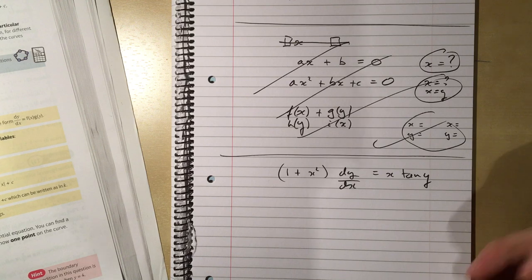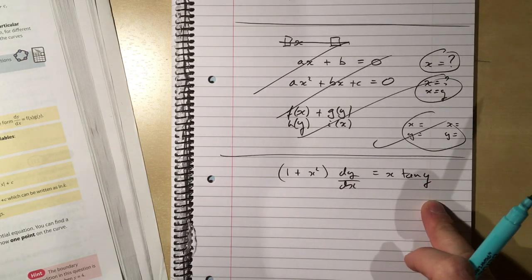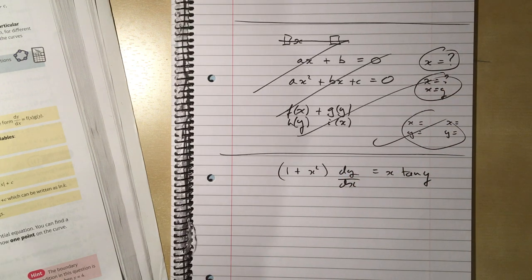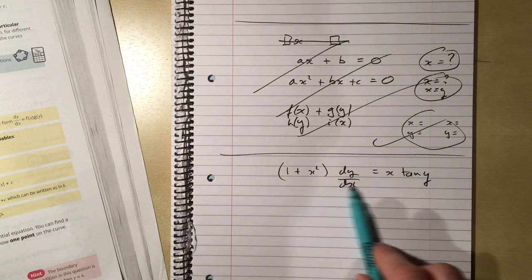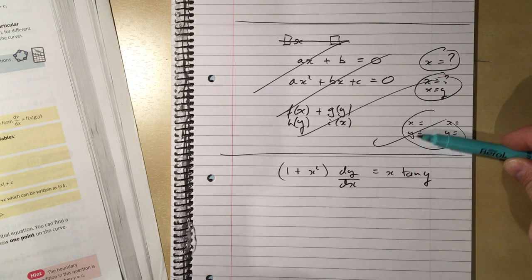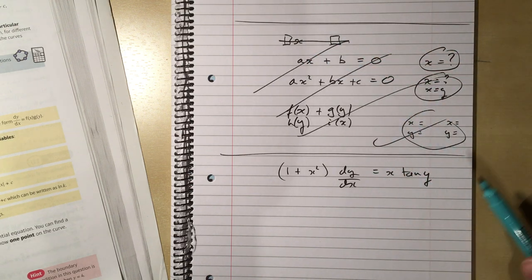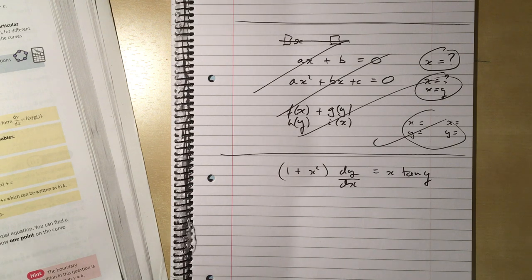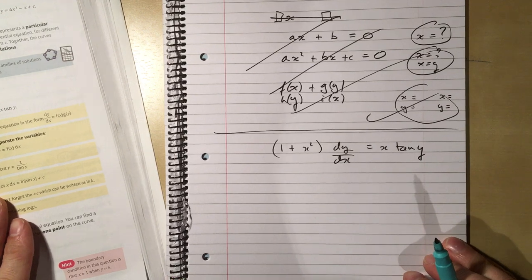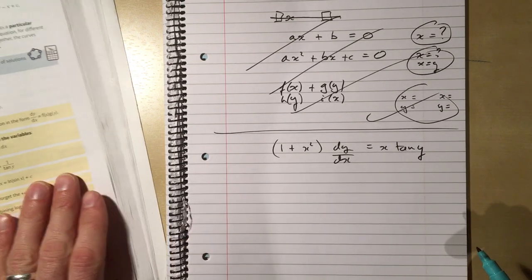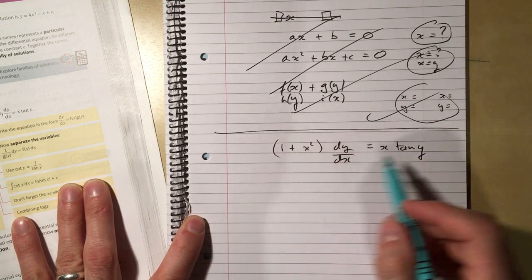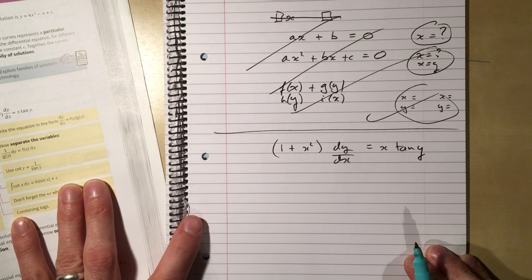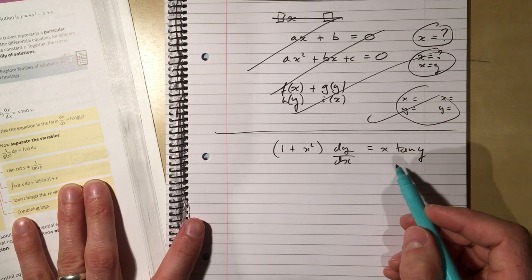If I have a function that works in this way: if you do (1 + x²) times the derivative of the function equals x times tan y — what function could that possibly be? That's the question we're asking with the differential equation. A differential equation links x's, y's, and dy/dx's, and the solution is what function follows these properties. The actual method for solving the equations is pretty simple.